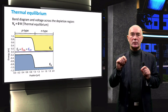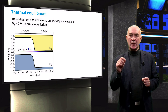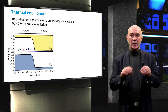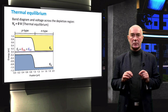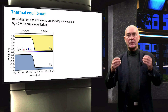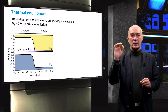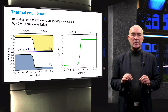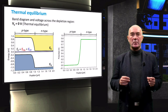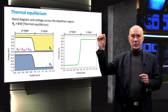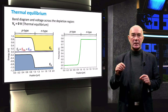At thermal equilibrium, there is a single Fermi level at the same energy position across the PN junction. This tells us that the total electrochemical energy of electrons is the same all over the PN junction and indicates that there is no net current flowing. There are diffusion and drift currents of electrons and holes across the depletion region, but they compensate each other so that the net current is zero. On the right side of the slide, the graph of the electrostatic potential shows that the N-type region is positive with respect to the P-type region. Now let's apply a forward bias to the PN junction.